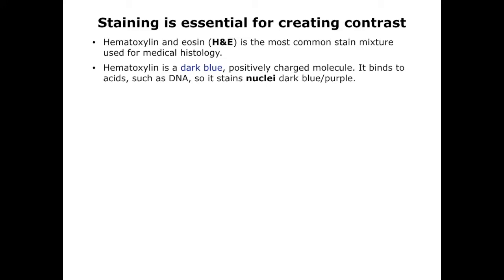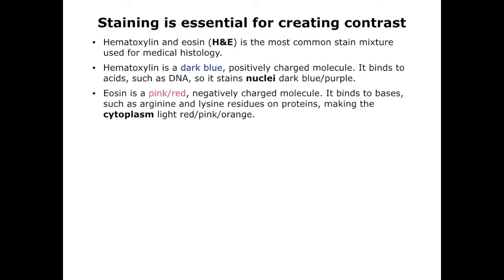Hematoxylin is a dark blue molecule that is positively charged. Therefore, it binds to acidic structures, such as the DNA packaged in the cell's nucleus, and stains nuclei dark blue or purple. Eosin is a pink-red molecule that is negatively charged. It binds to basic molecules, such as the arginine and lysine residues on proteins. This tends to give the cytoplasm a lighter red, orange, or pinkish color.